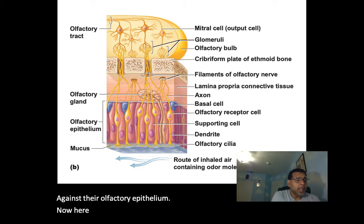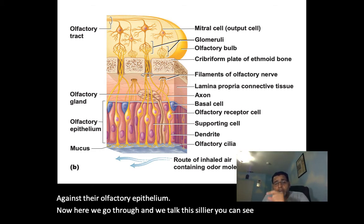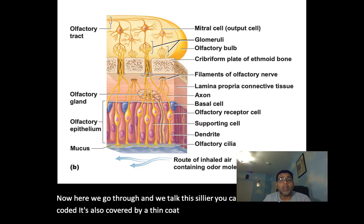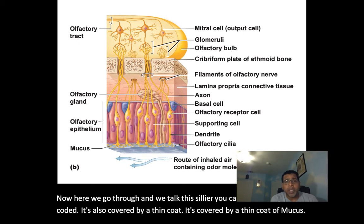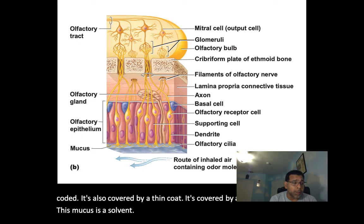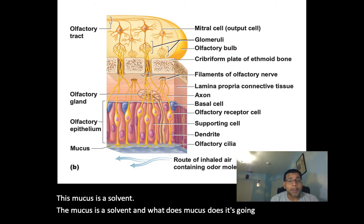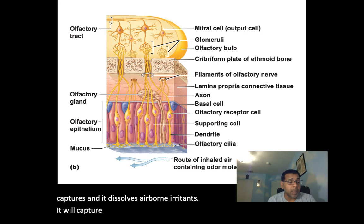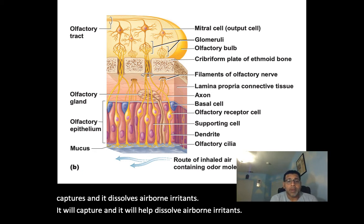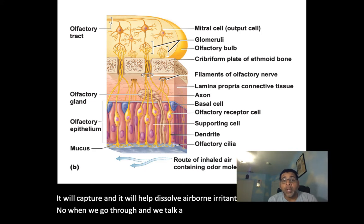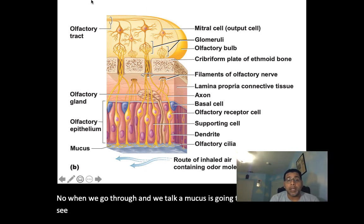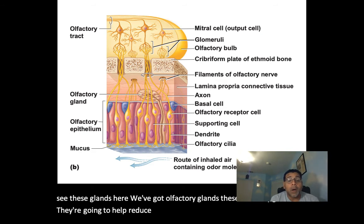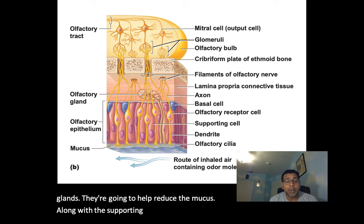The cilia is also coated — covered by a thin coat of mucus. This mucus is a solvent. It captures and dissolves airborne irritants. This mucus comes from olfactory glands, which produce the mucus along with the supporting cells.